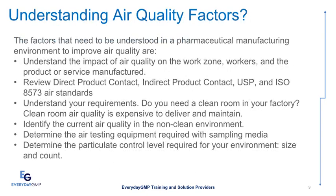The factors that need to be understood in a pharmaceutical manufacturing environment to improve air quality include: understanding air quality factors; the impact of air quality on the work zone, workers, and the product or service manufactured; reviewing direct product contact, indirect product contact, USP, and ISO 8573 air standards; understanding your requirements — do you need a clean room in your factory? Clean room air quality is expensive to deliver and maintain. Identify the current air quality in the non-clean environment, determine the air testing equipment required with sampling media, and determine the particulate control level required for your environment, including size and count.